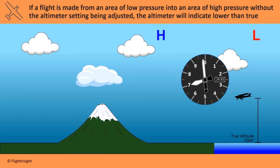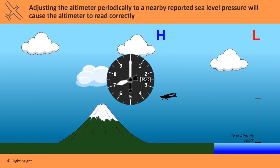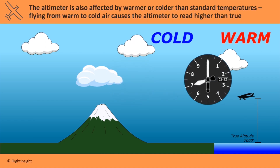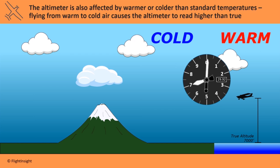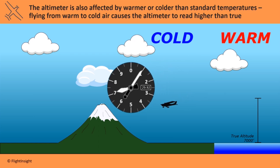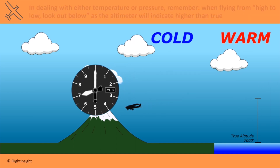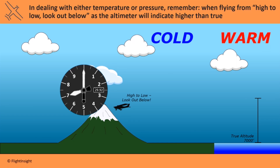Flying from an area of low pressure to high pressure causes the altimeter to indicate lower than the true altitude. The pilot needs to adjust the altimeter to a nearby reported sea level pressure obtained from air traffic control or a weather report. Because temperature affects air density, the altimeter is also affected by temperatures warmer or colder than standard. Flying from warm to cold air causes the altimeter to read higher than true altitude. The pilot may descend to correct for what is incorrectly shown as a higher altitude, putting the aircraft closer to terrain. The memory aid for navigating with the altimeter, whether flying from different areas of pressure or temperature, is: going from high to low, look out below.